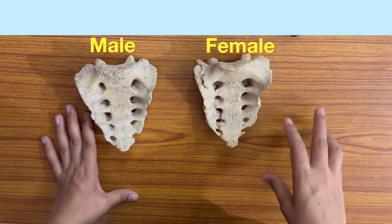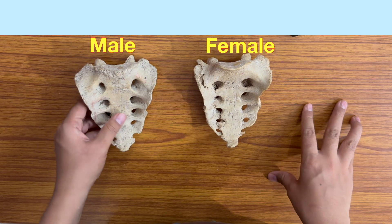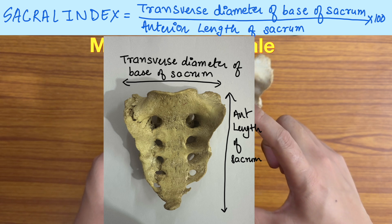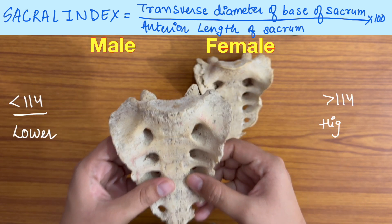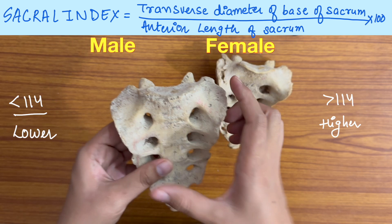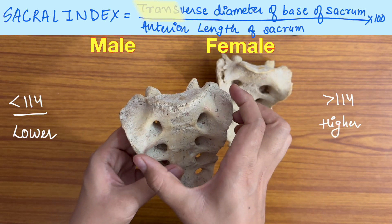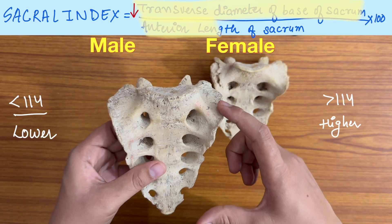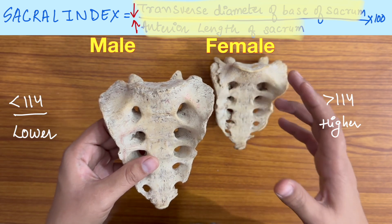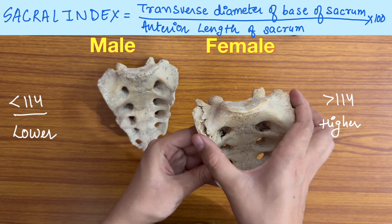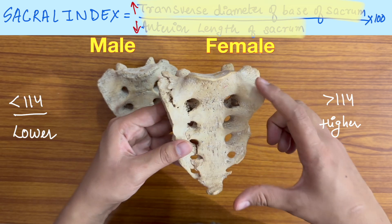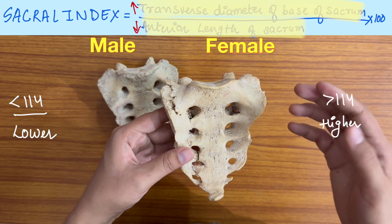The sacral index is the transverse diameter of the base of the sacrum divided by the anterior length of the sacrum, multiplied by 100. It is less than 114 in the male and more than 114 in the female. Since the male sacrum is narrower and longer, the transverse diameter is lesser and the anterior length is more than in the female, making the numerator lesser and the denominator more — hence this index is lower in the male. In females, the sacrum is broader and shorter, so the numerator is more and denominator less, making this index higher in the female.